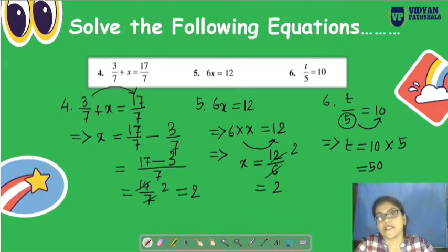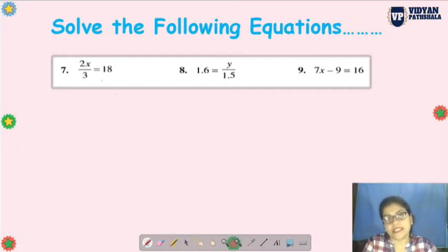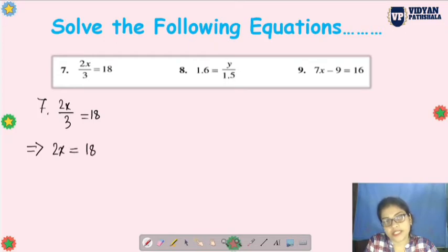Sixth question: t/5 equals 10. So t is divided here, meaning 5 is dividing here. When it goes to that side, what happens? It becomes multiply. So t equals 10 times 5, that is 50. So the answer is 50.